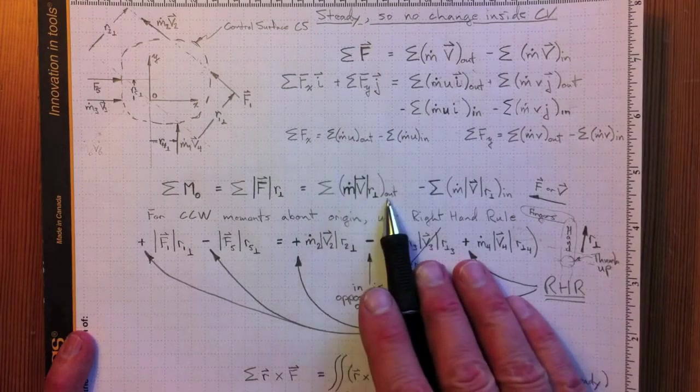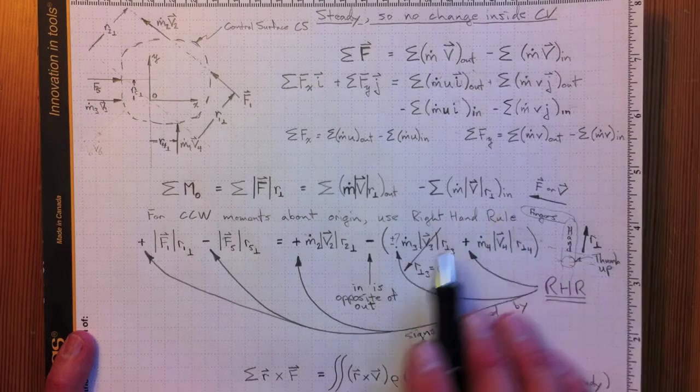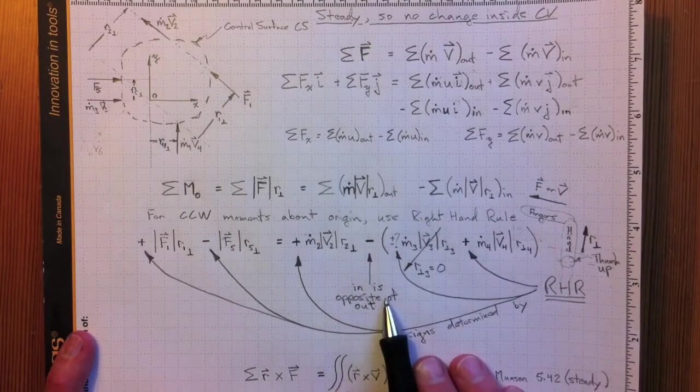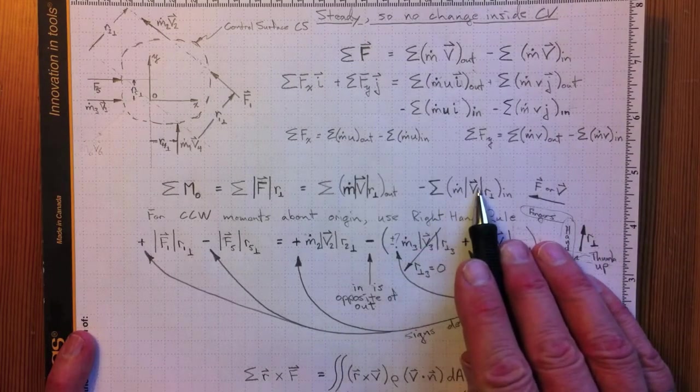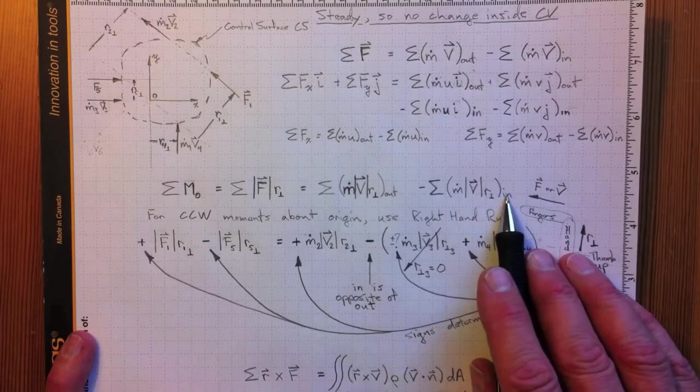So there's the outflow. Now for the incoming momentum, we get a negative sign here because in is the opposite of out. And then inside here we have to take the sum of M dot V magnitude times R perpendicular for all the inflows.